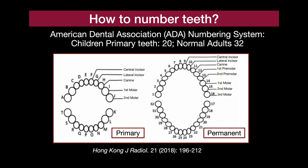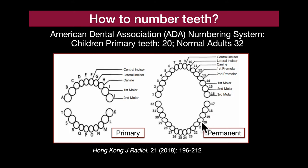Tooth numbering can be a little bit confusing. What I tend to do is try to picture a patient with their mouth very wide open, looking into the mouth and upward — looking at the upper right maxillary molar, going around to the central incisor, which is number 8 and 9, and then around to the left, and that continues down the left mandibular side all the way around to tooth number 32 on the lower right.